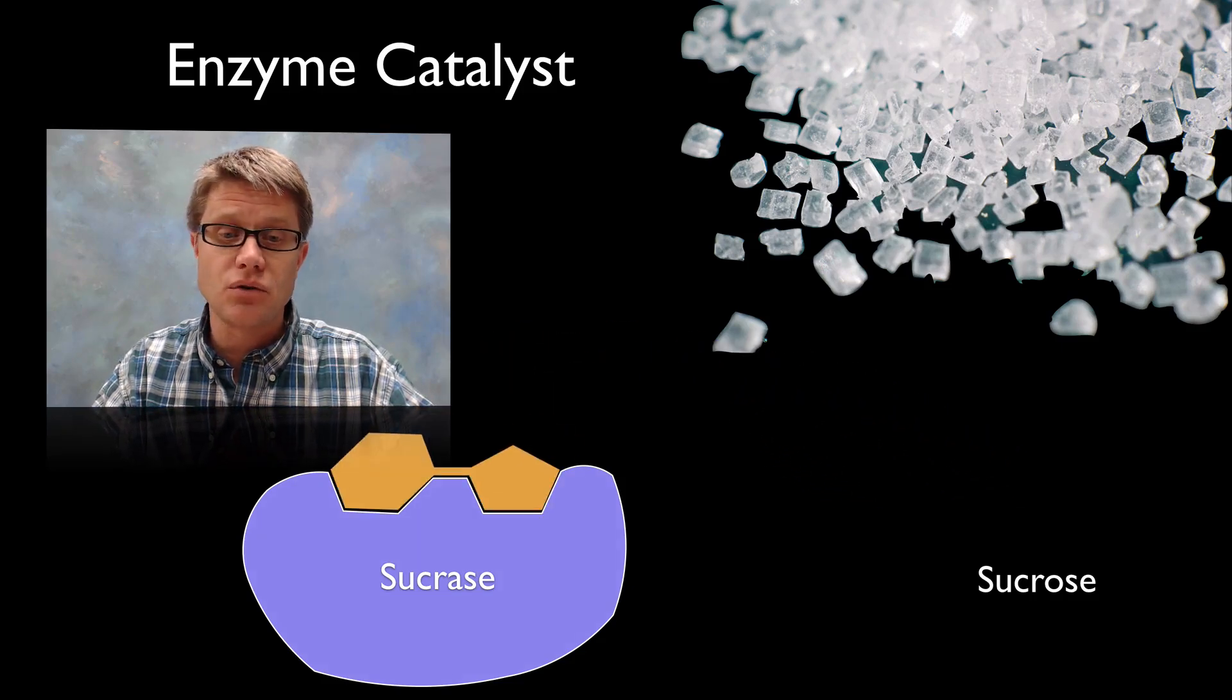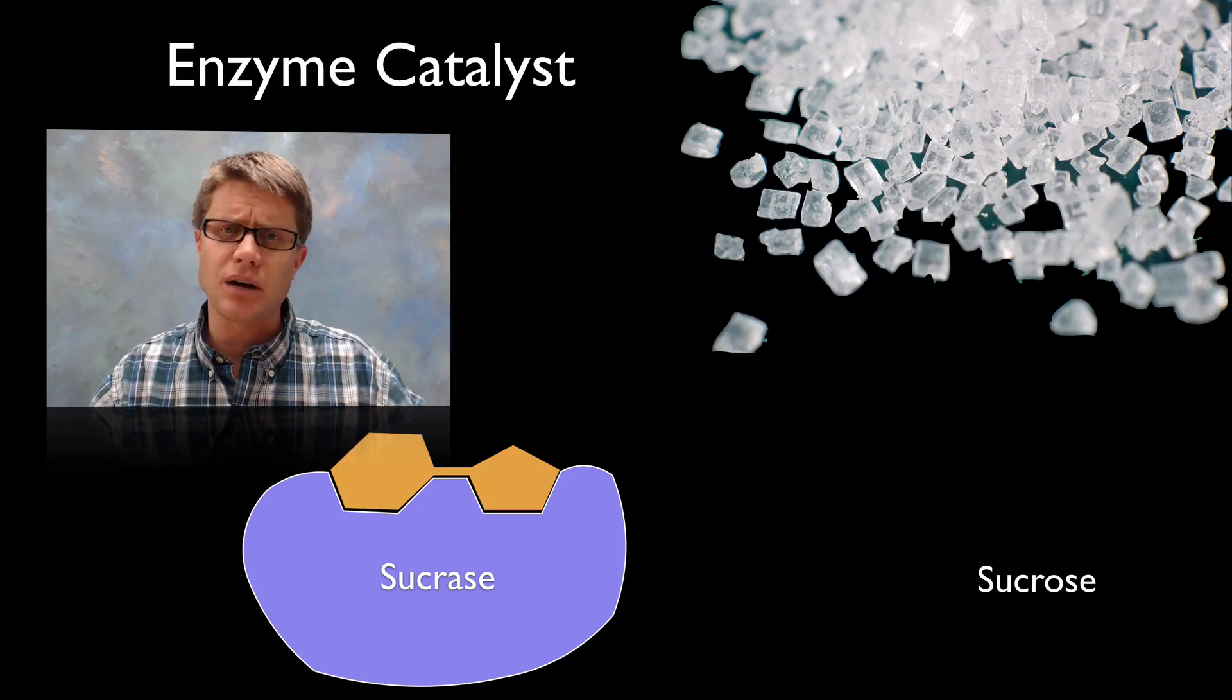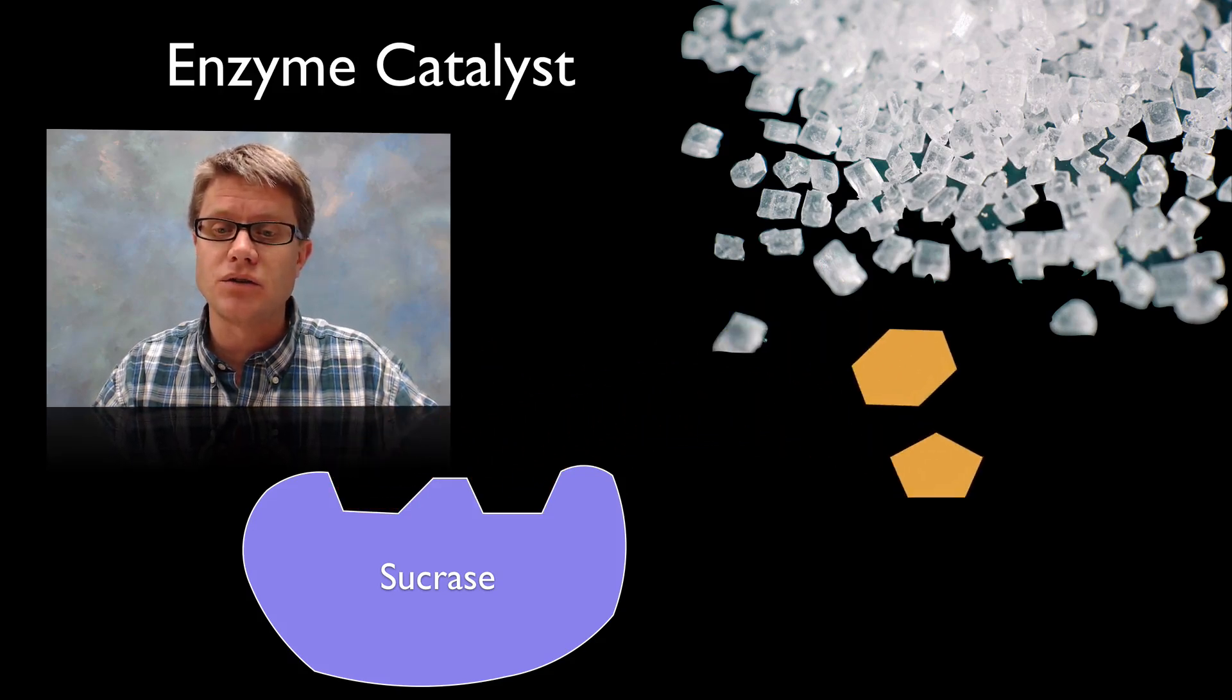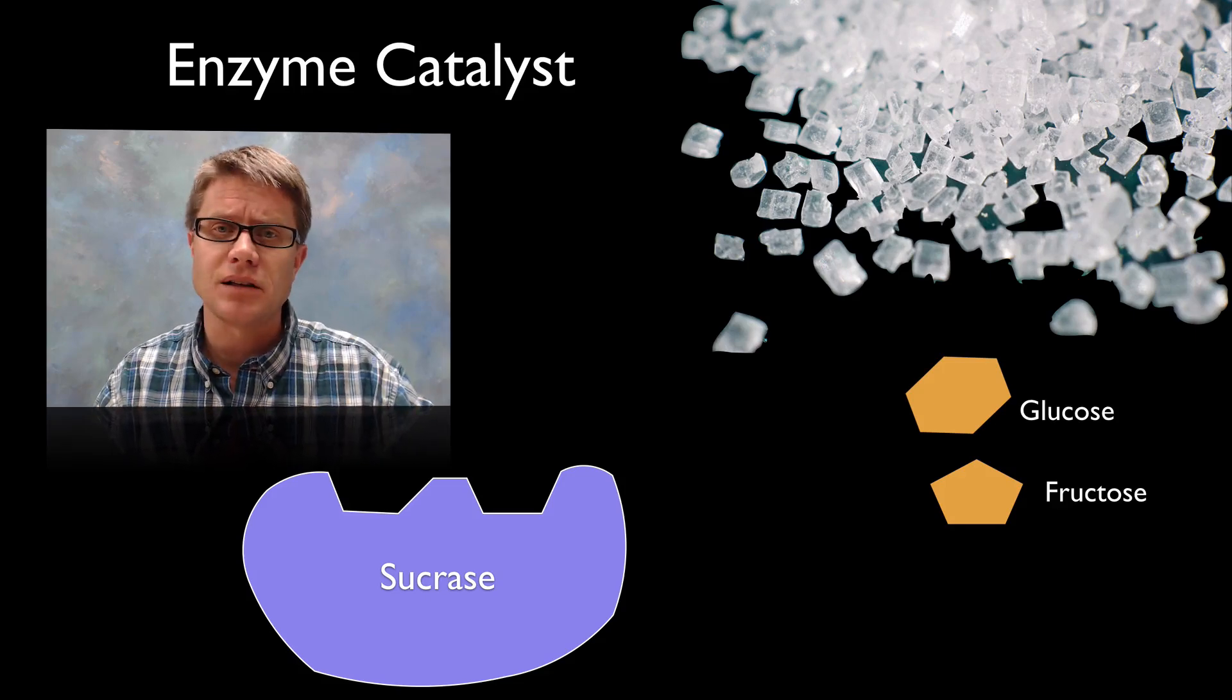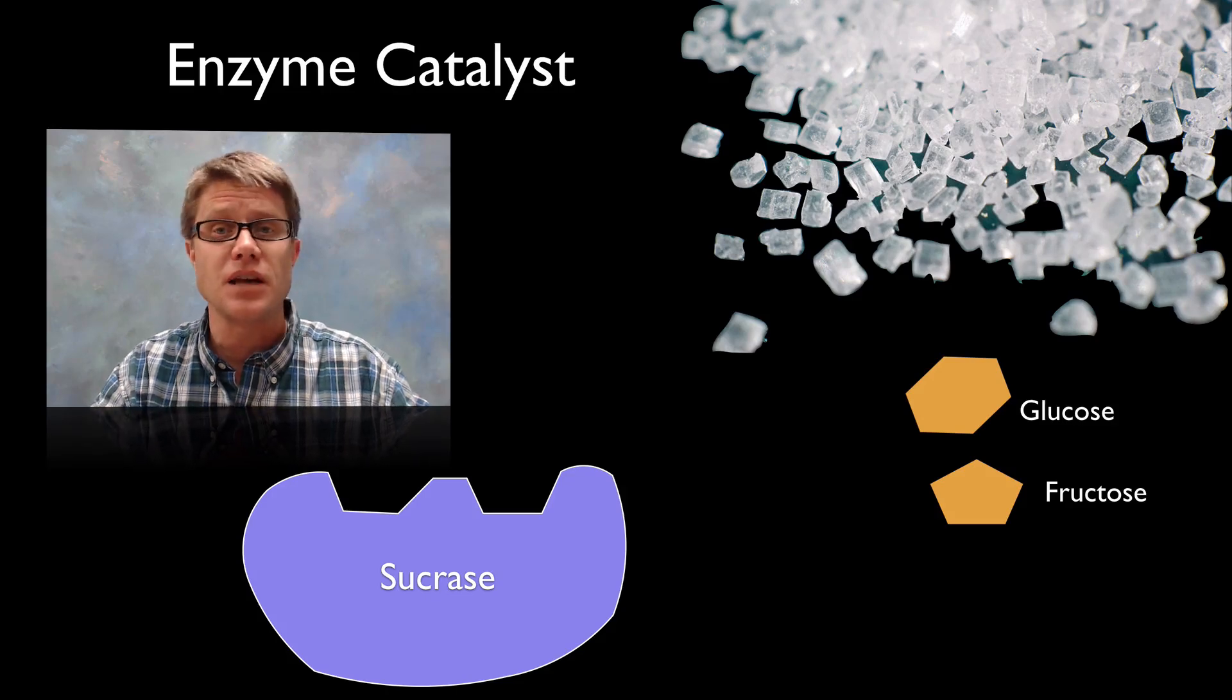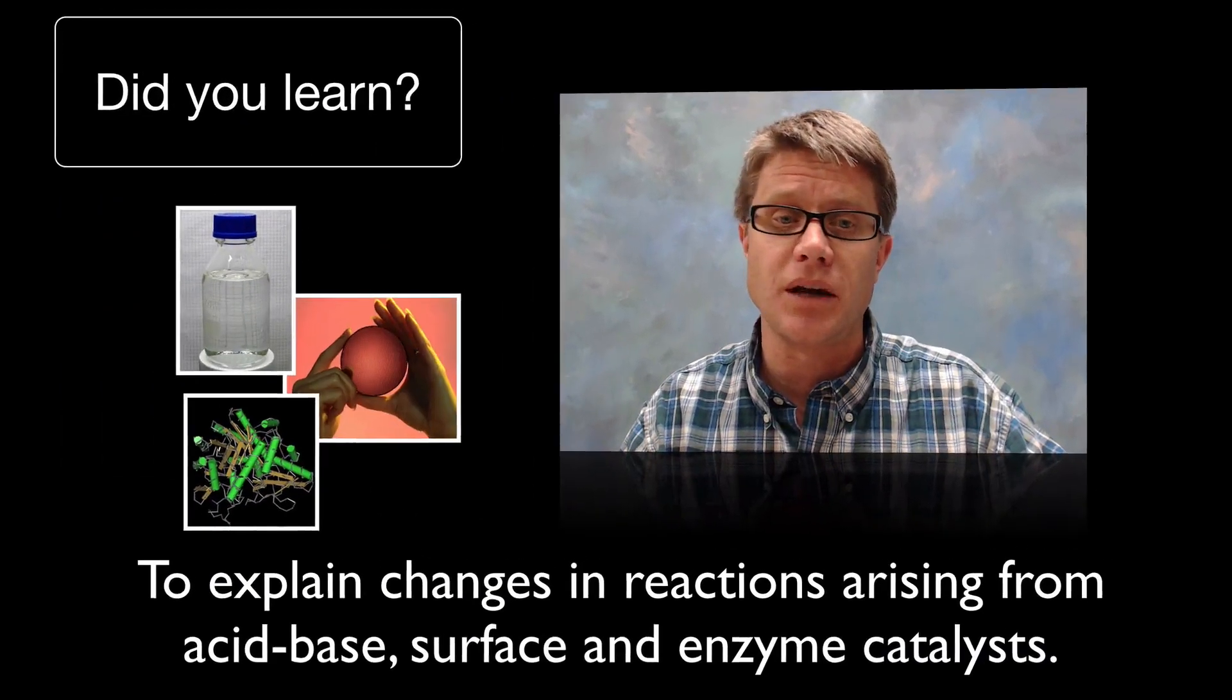And what's going to happen is the sucrase will hold the sucrose. And what it does is that you have this fit where the enzyme kind of wraps around it and tugs on that. And as it does that we can break that disaccharide apart into its two monosaccharides. And everything in our body is going to be mediated through enzyme catalysts like this. If you have a hard time breaking down lactose, it's because you don't have lactase, that enzyme that can break it up. And so how do we control everything in our body? It's through these biological catalysts that are made of proteins.